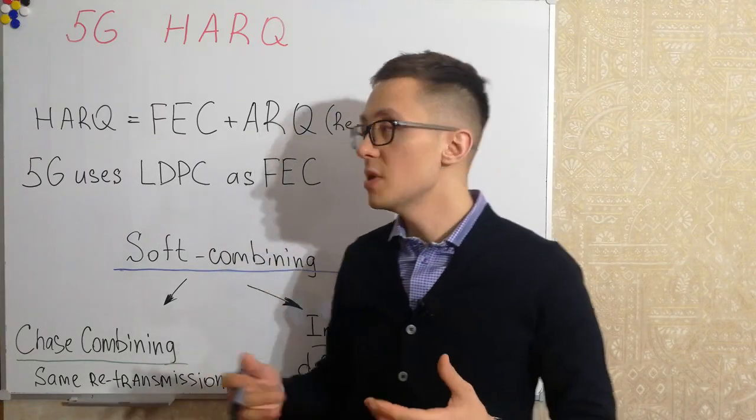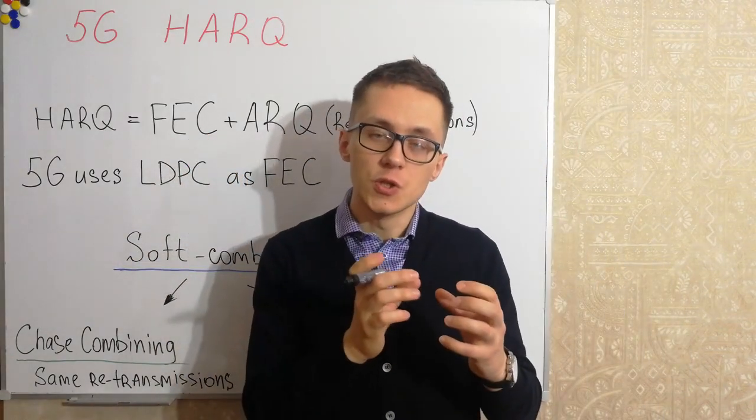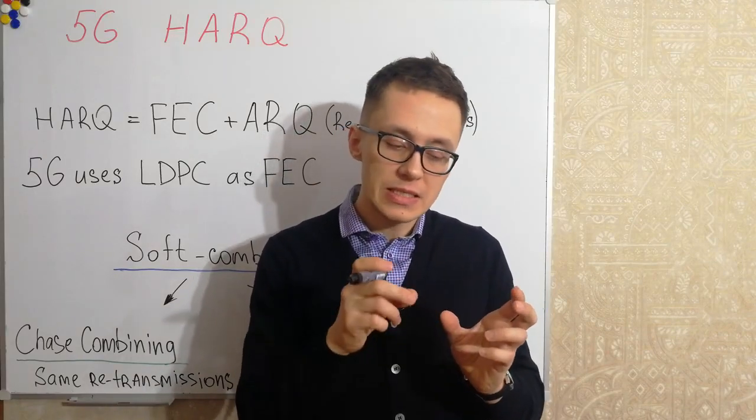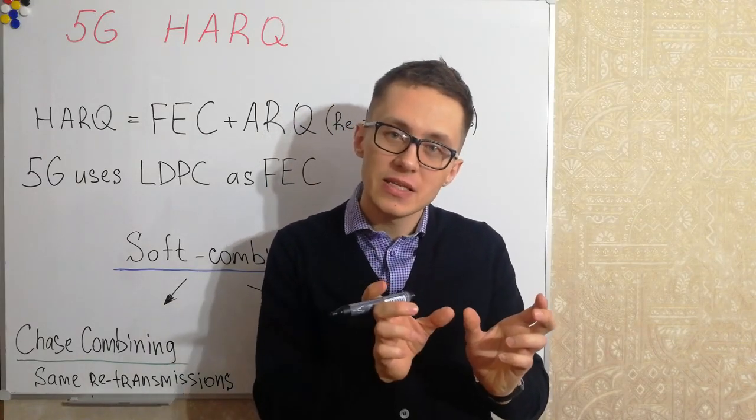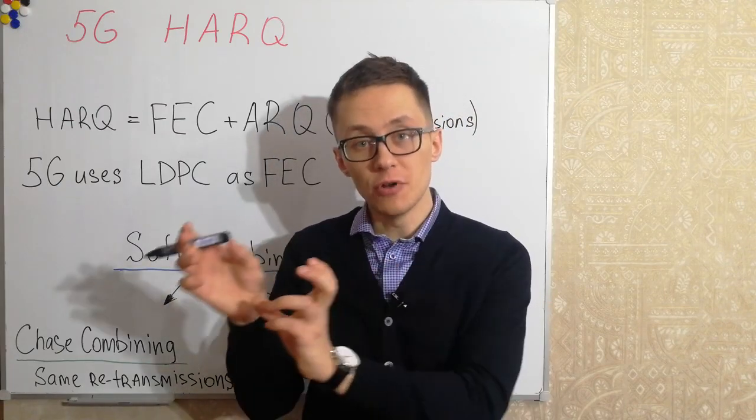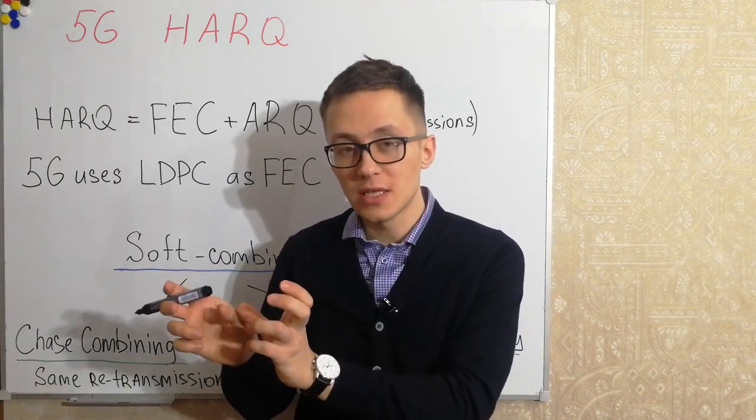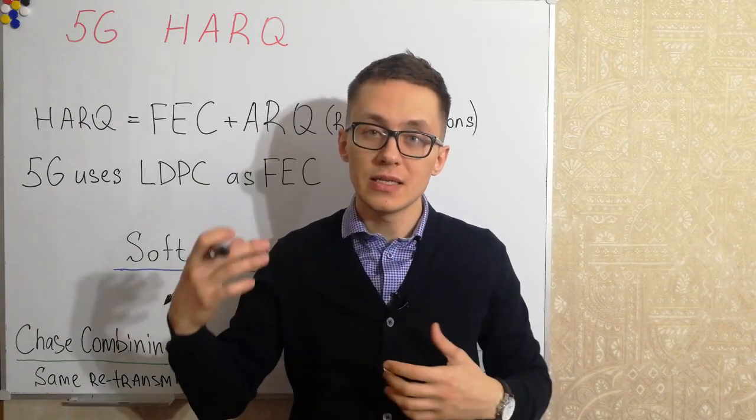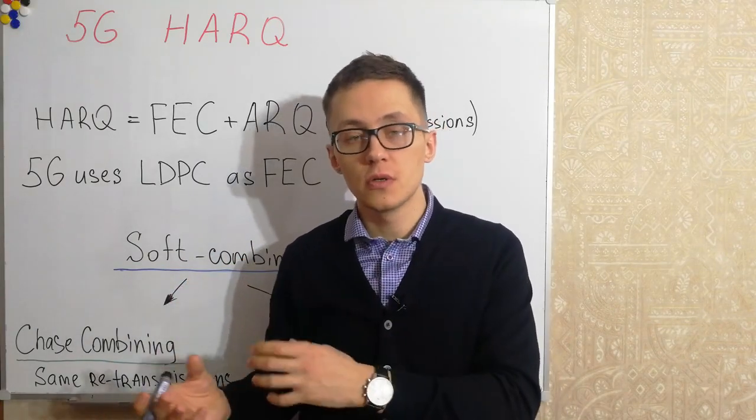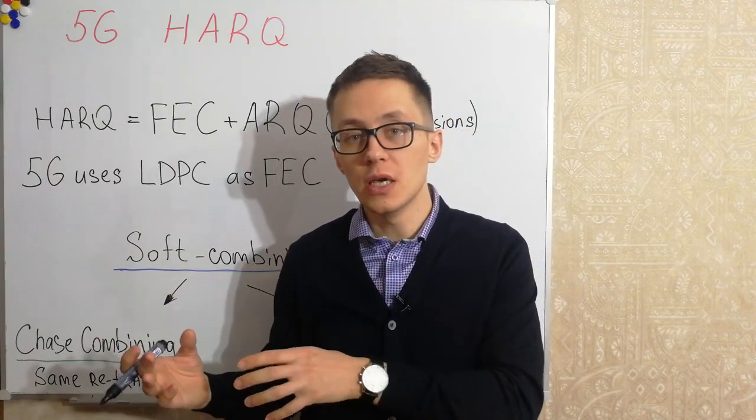So what does it mean forward error correction? It means that in addition to a useful message, the system can add additional information about that and receiver can check this additional message and understand if this message was corrupted or not, if that message contains errors or not.